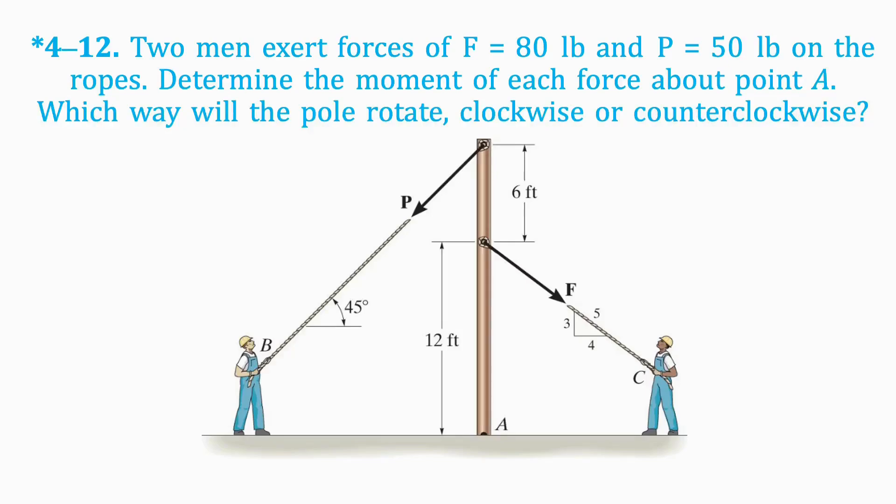Welcome back to Quick Statics Answers. Today's question is: two men exert forces on the ropes. Determine the moment of each force about point A. Which way will the pole rotate?